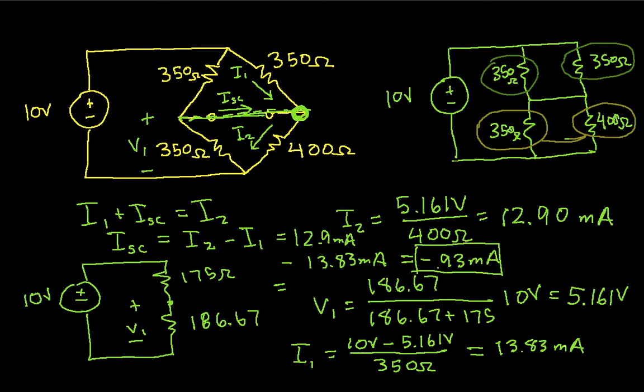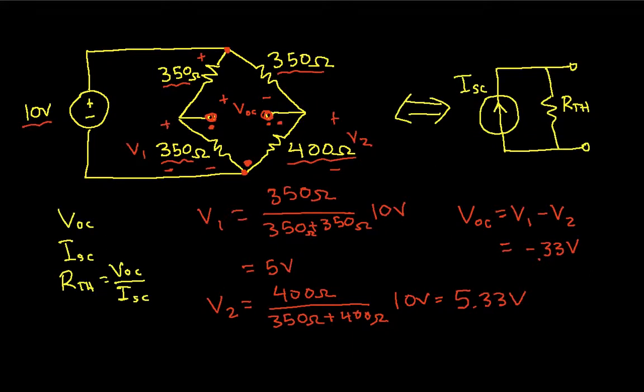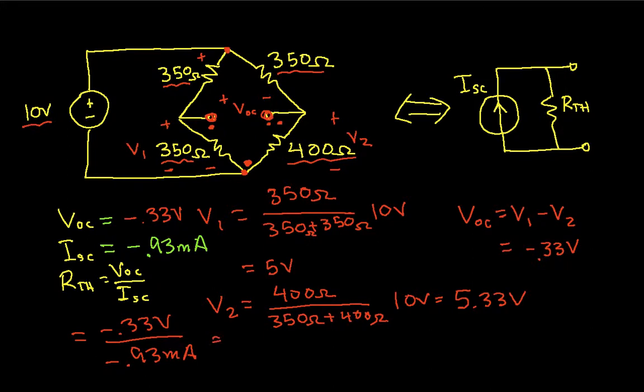Now, all we need to do is go back to our original page. We have the open circuit voltage. The short circuit current was minus 0.93 milliamps. The open circuit voltage was minus 0.33 volts. So R-thevenin is minus 0.33 volts divided by minus 0.93 milliamps, which is equal to 354.8 ohms.